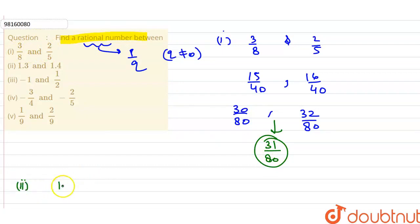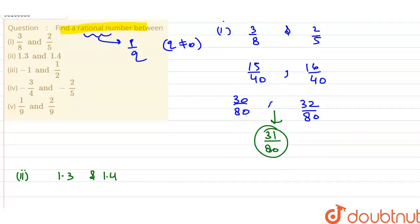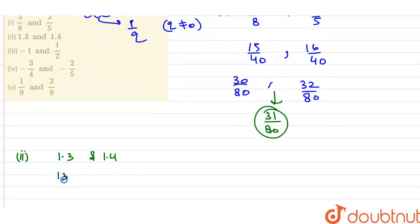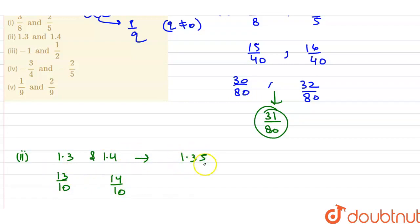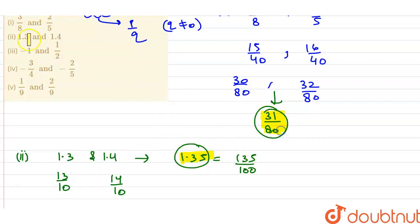The second part: the numbers are 1.3 and 1.4. So 1.3 we can write as 13/10, and 1.4 we can write as 14/10. This is a P/Q form. I want to take the rational number 1.35. Now 1.35 is 135/100, so this is my P/Q form. The answer is 1.35.